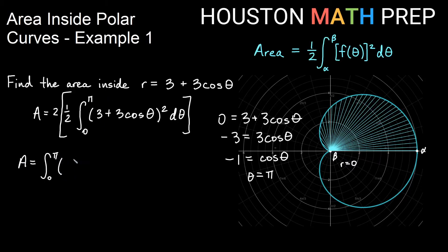Let's go ahead and distribute this. So I would get 3 times 3. I'd get 3 times 3 cosine theta, which is 9 cosine theta, plus another one of those when I distribute. So I'd get 18 cosine of theta. And then this last thing squared, we would get 9 cosine squared theta.